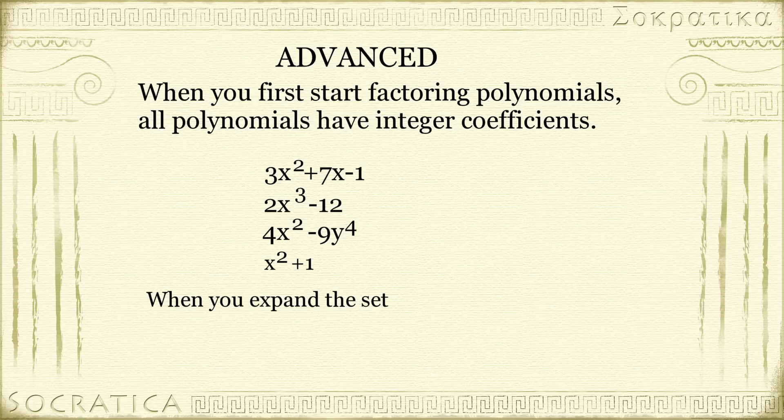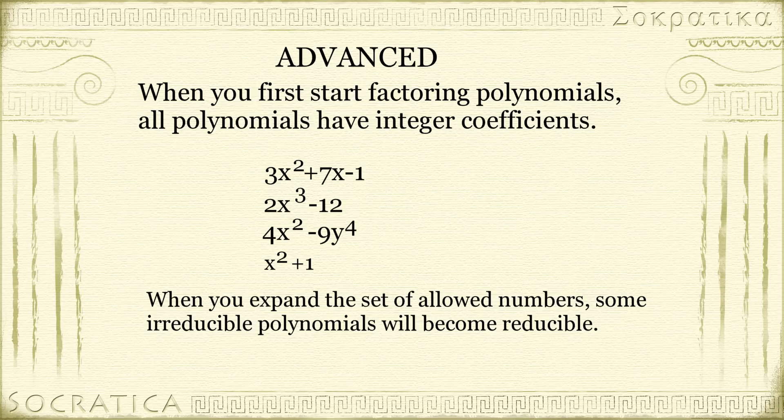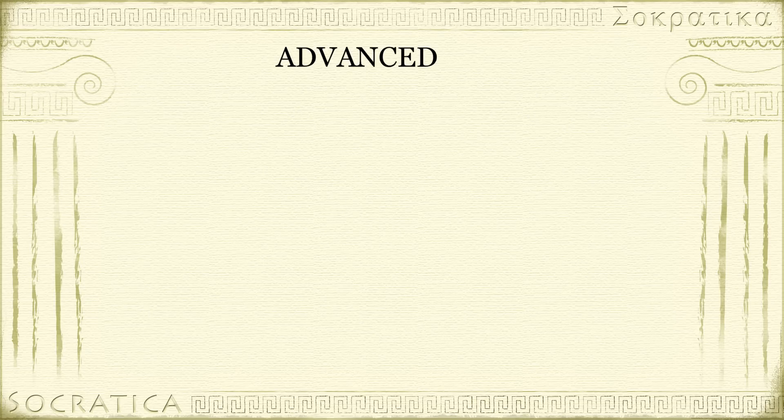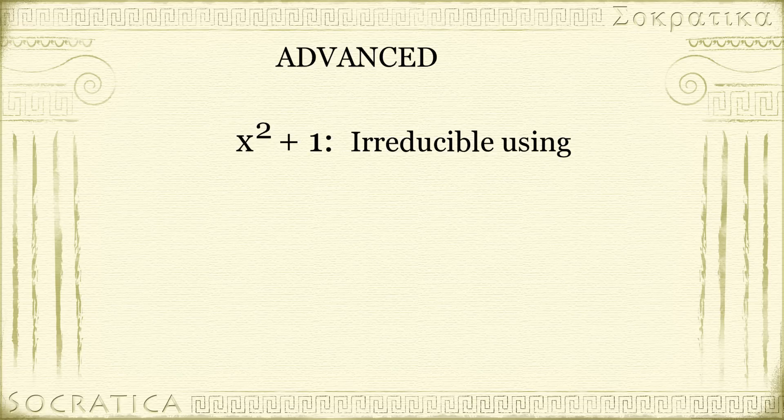When you expand the set of allowed numbers, some irreducible polynomials will become reducible. So let's consider the example of x² + 1. This is the sum of two squares, and it's irreducible if you're only working with integers.